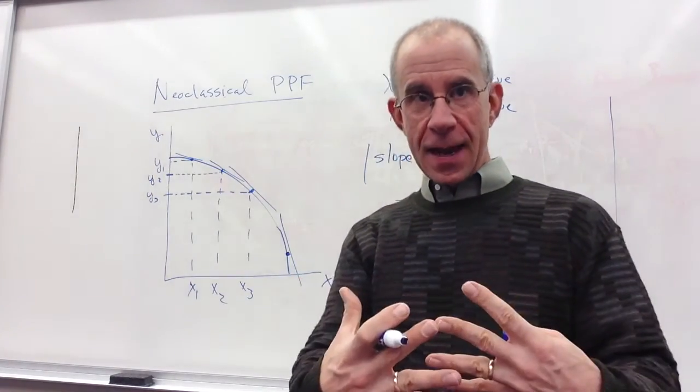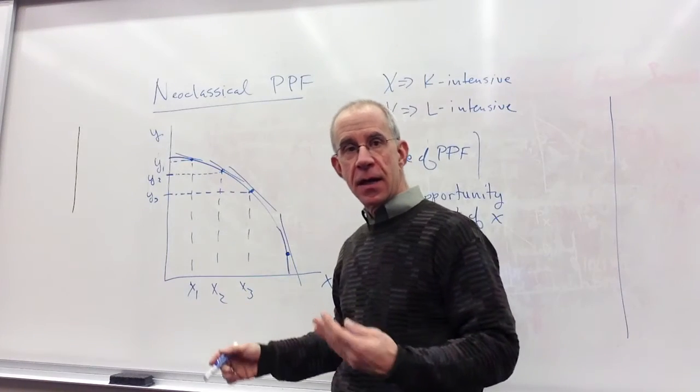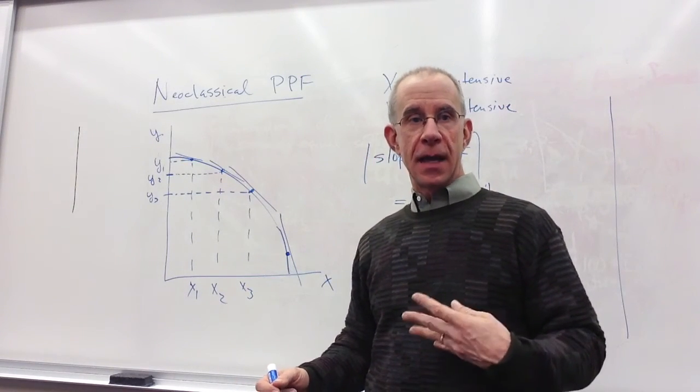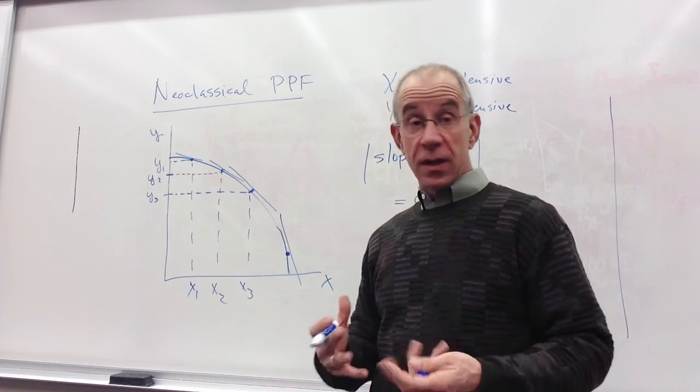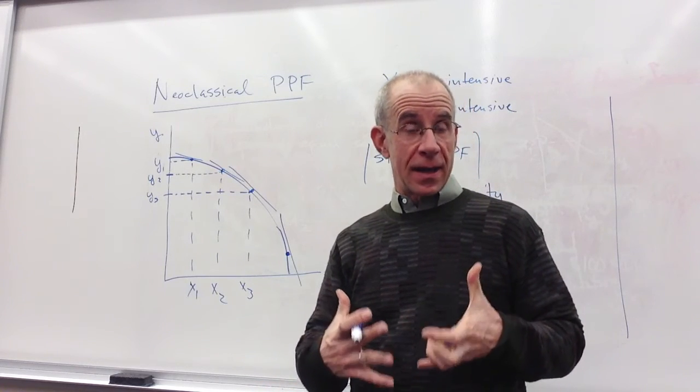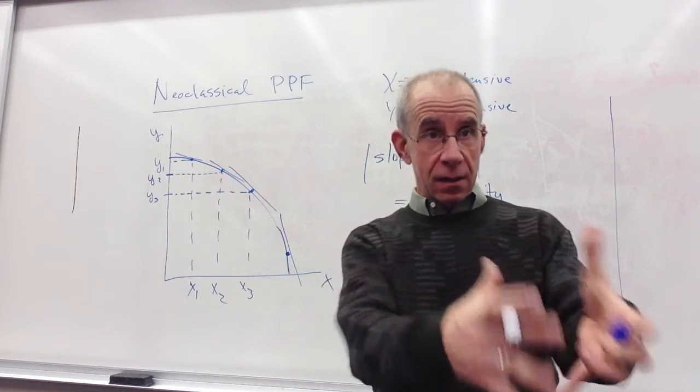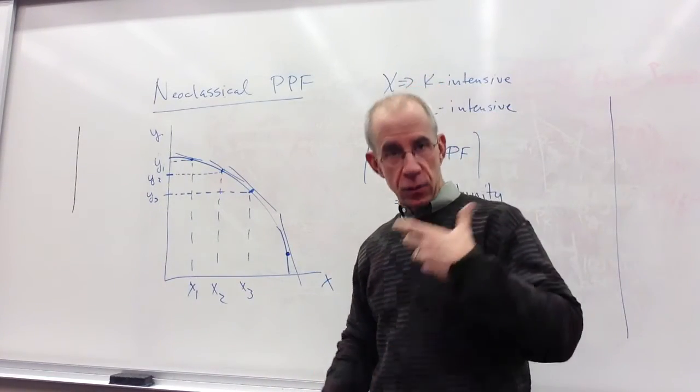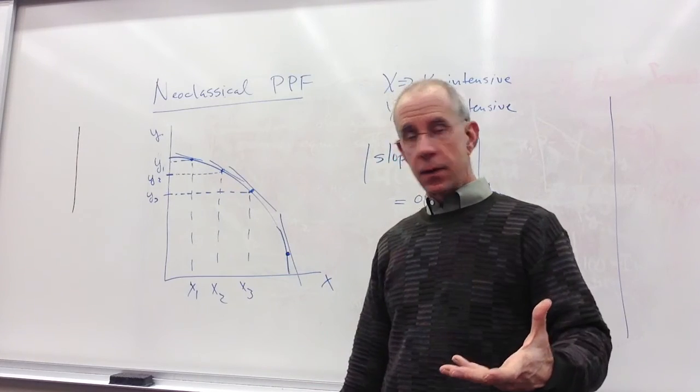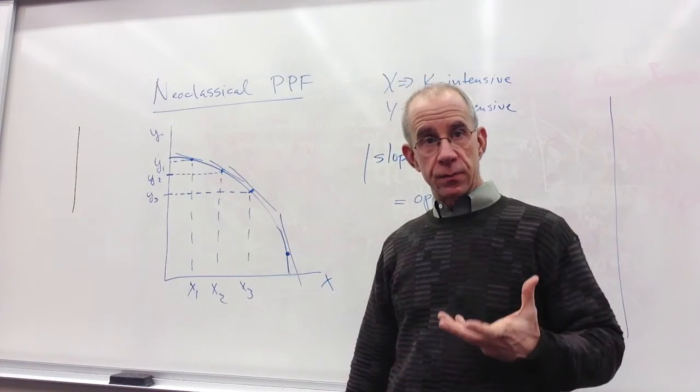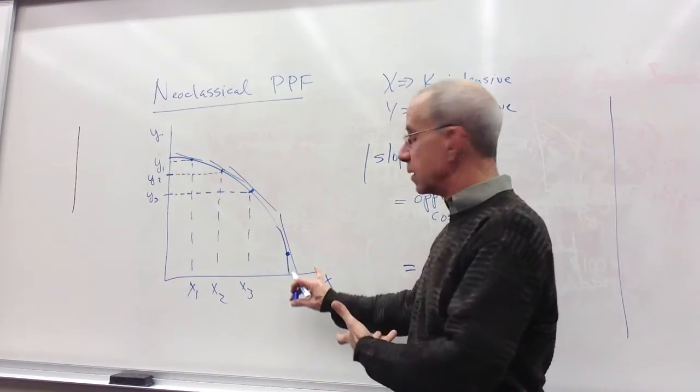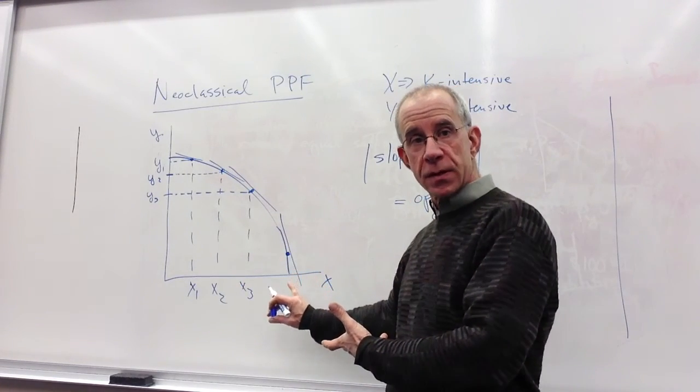And so what's going to be happening is when you get down here is that the combination of inputs that are coming into the X sector is really kind of a quite labor-intensive bundle that is being released to go into the X sector. You can produce more of X, but the trade-off is going to get higher and higher as you get down towards the X axis.